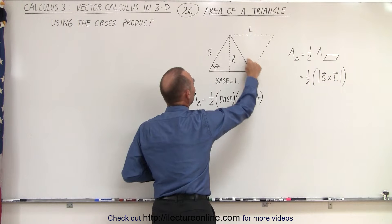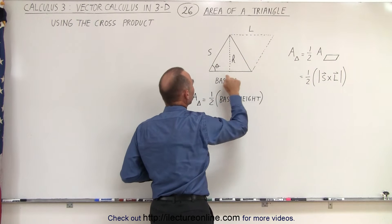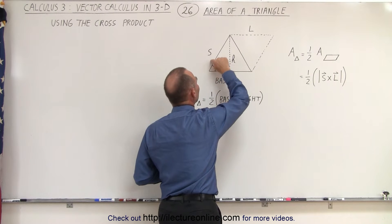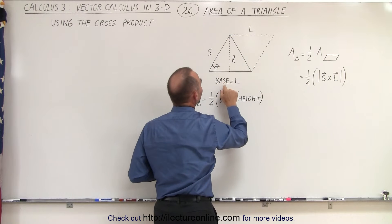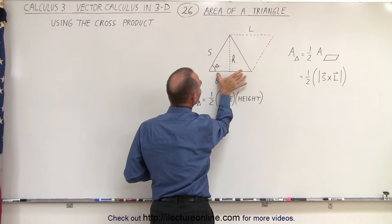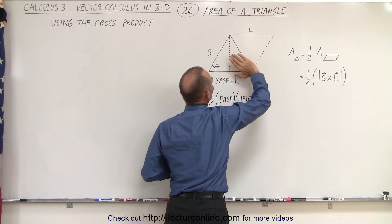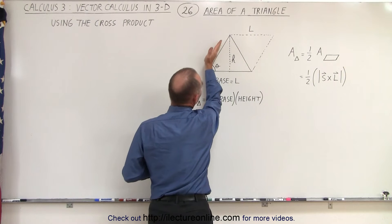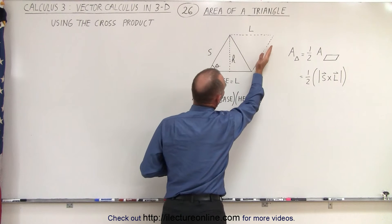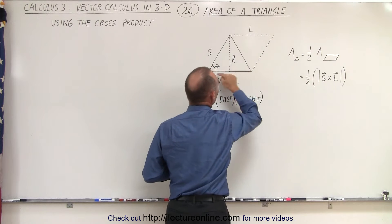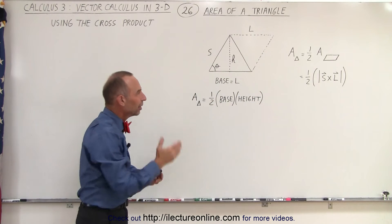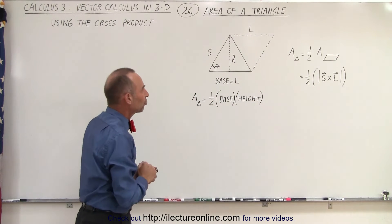Notice that here we have the triangle — this is the base of the triangle, and this is the left side of the triangle. If we repeat this length over here, this is basically the triangle upside down. If we then take this side and move it over there, we have a parallelogram, which is exactly twice the area of that triangle.